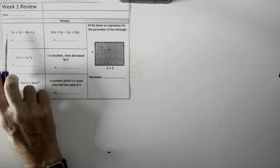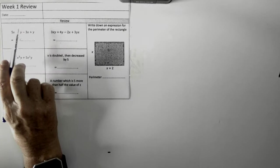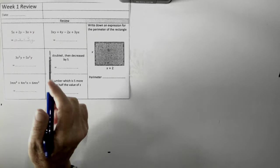So, we can only put the X's with the X's. We've got five of them, and we lose three. So, we're down to two X's. And then the Y's and the Y's can go together. We've got two and one more. So, we've got three Y's.